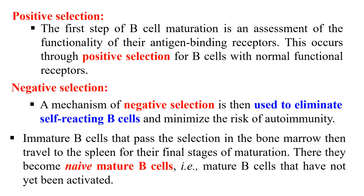This selection procedure exists to avoid autoimmune diseases. During negative selection, auto B cells acting against self-antigens are eliminated. The immature B cell then passes selection in the bone marrow and travels to the spleen for the final stage of maturation, where it becomes a mature B cell — called a naïve B cell. A naïve B cell is one that is mature but has not yet encountered any antigen.